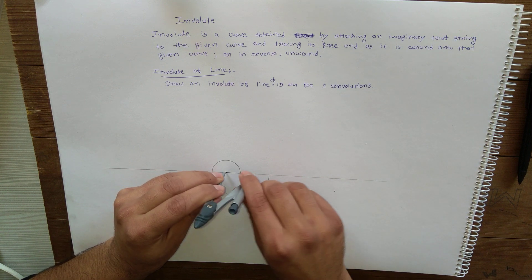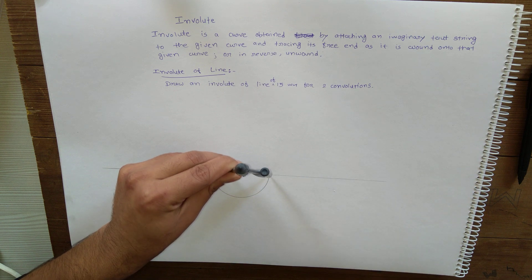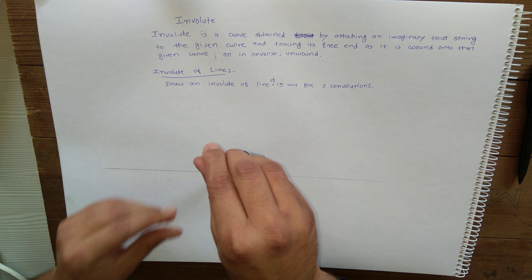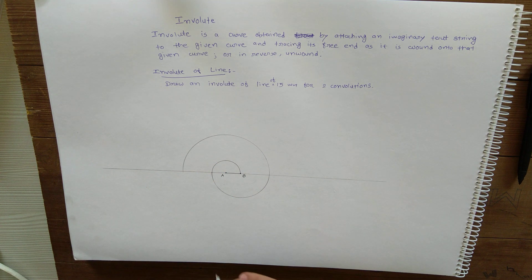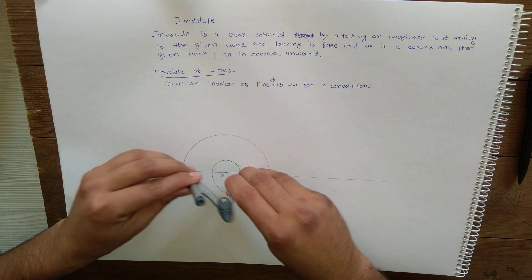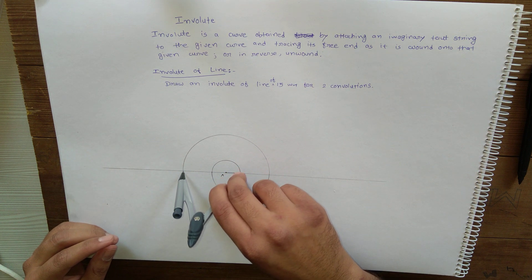So again, change the center as A, radius equal to this. Again, take center as B. 1.5 convolutions has been completed, so this is the final arc.